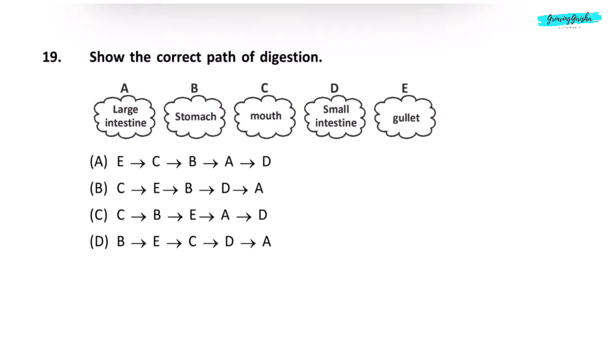Show the correct path of digestion. The food first goes in the mouth, then into the gullet, then into the stomach. From the stomach, it goes into the small intestine, then into the large intestine. The path is C, E, B, D, A. Correct answer is option B.